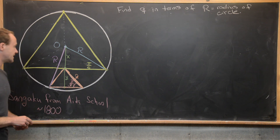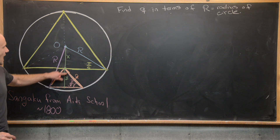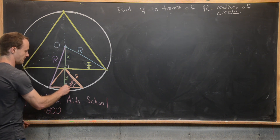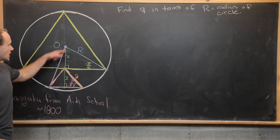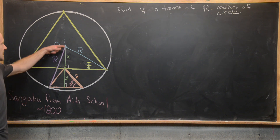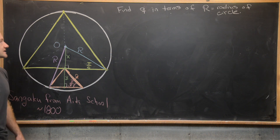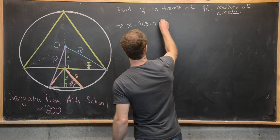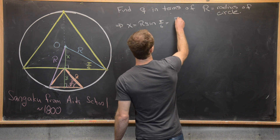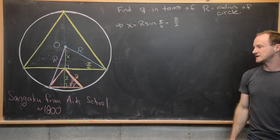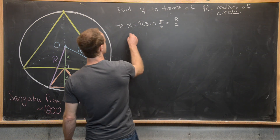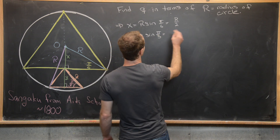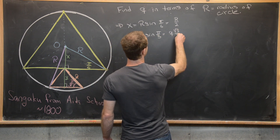Using trigonometry on the right triangles formed, we can calculate x and y in terms of R and Q. The right triangle with hypotenuse R and height x gives us x equals R times sine of pi over 6, which equals R over 2. The right triangle with hypotenuse Q and height y gives us y equals Q times sine of pi over 3, which equals Q times the square root of 3 over 2.